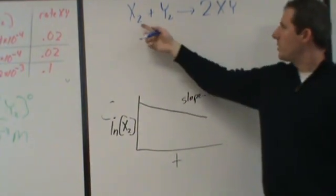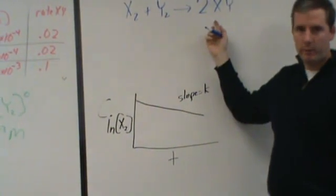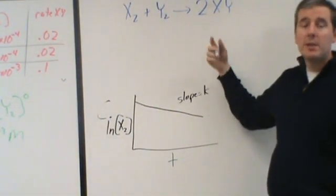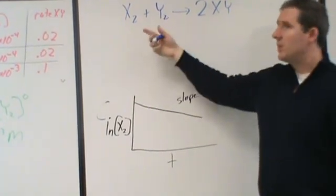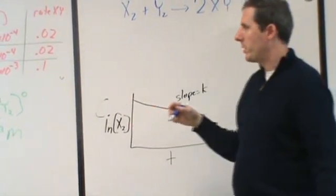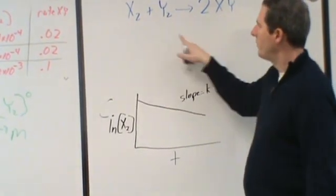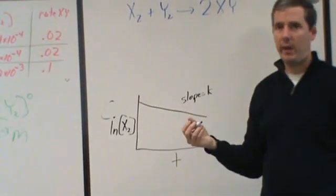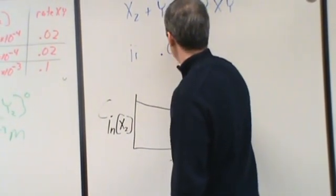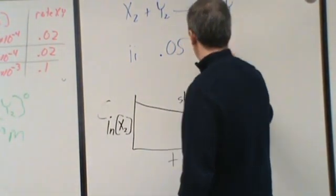So if we actually look at our reaction, it was x2 plus y2 becomes 2xy. So in terms of stoichiometry, one of these and one of those makes two of those. So when you're tracking your rate as this, that means that that's appearing twice as fast as these would disappear. So when it says, what would the rate be for experiment 3? For this, it's 0.1. For either of these, it's going to be half of that value.